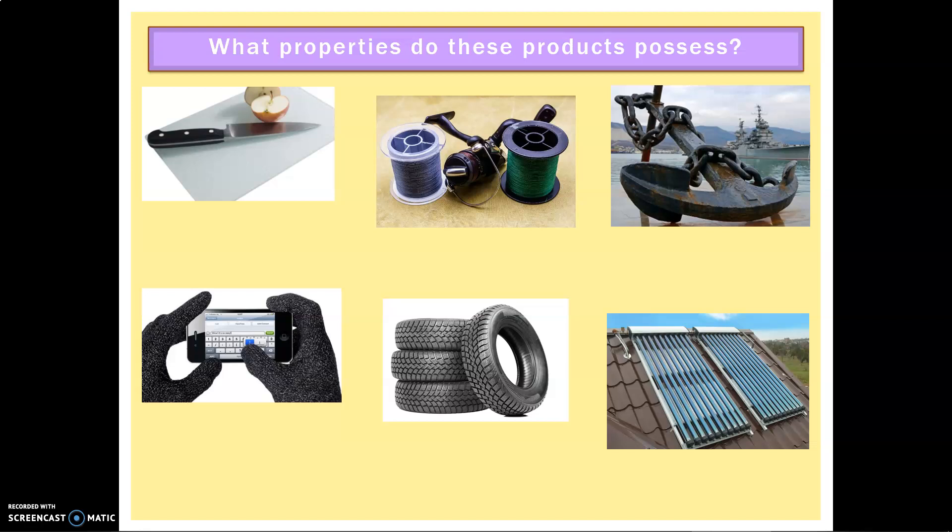All right, so I hope you had a little thought. Let's go through the answers. So the first, our chopping board, of course, is very hard. That's its main property that we are looking for. You want to be able to resist abrasion. If you left it with loads of knife marks, it's going to make it open to bacteria.